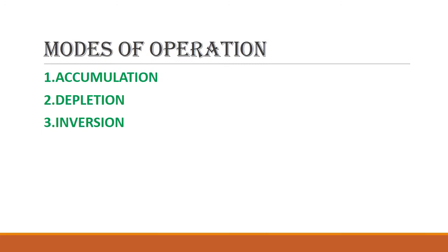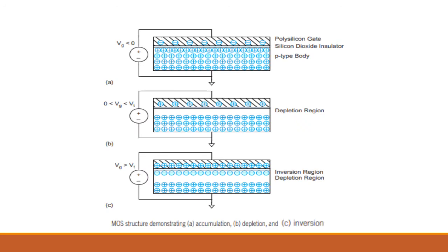There are three important modes of operation: accumulation, depletion, and inversion. In accumulation mode, we use a P-type body (N-MOS transistor) and apply a negative voltage to the gate terminal. The negative charge carriers (electrons) accumulate at the gate and attract the holes present in the P-type body. This mode is called accumulation mode.